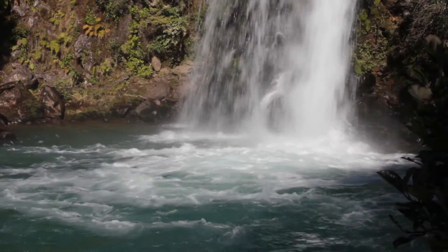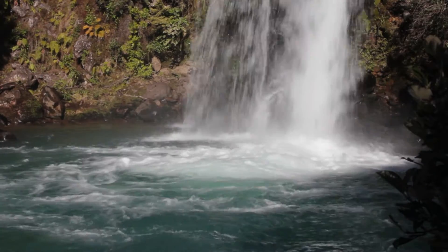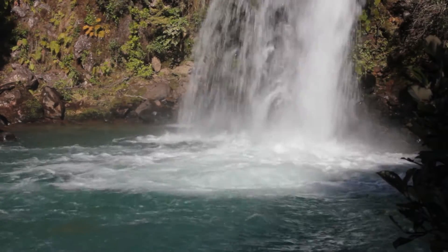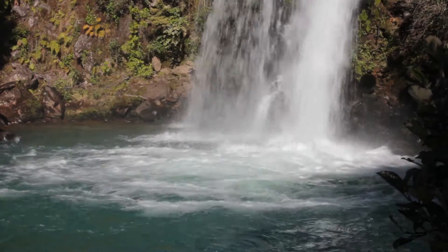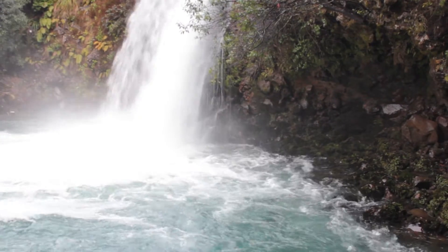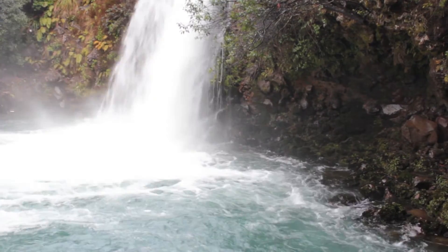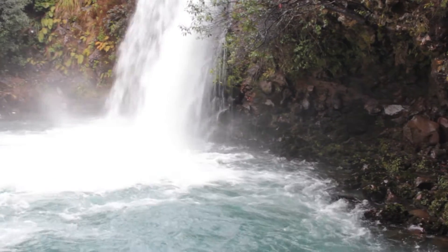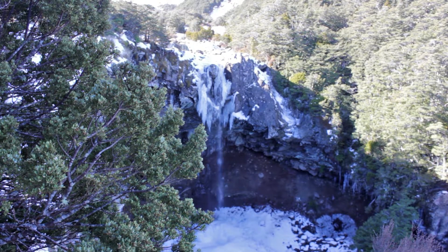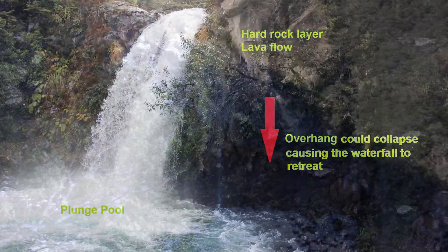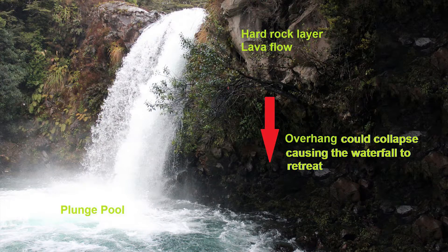The base where the waterfall lands is called a plunge pool. Soft rock layers directly under the hard rocks are undercut, creating an overhang. Eventually, the overhanging rock becomes unstable due to the undercutting process, whereby it may collapse and retreat.